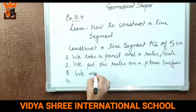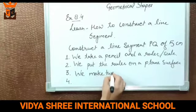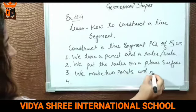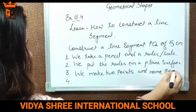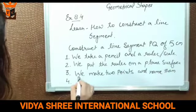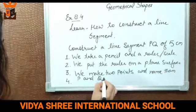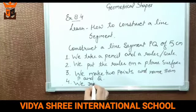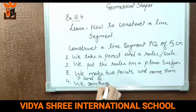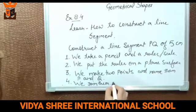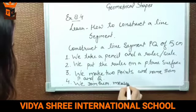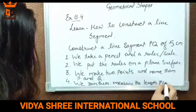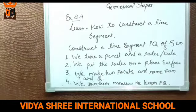Third, we make two points and name them. Since we are naming them P and Q, we will label them P and Q. And the fourth step is we join the points and then measure the length of PQ. At the end, we make PQ a line of the required length.